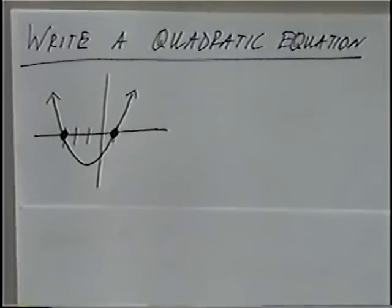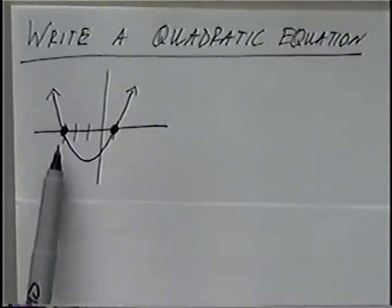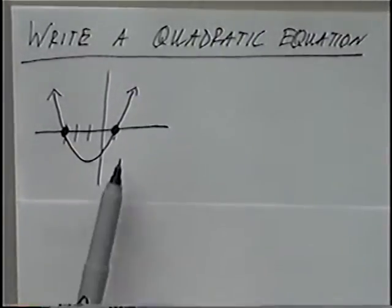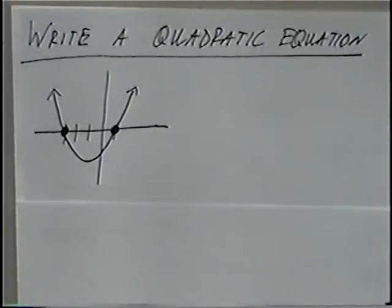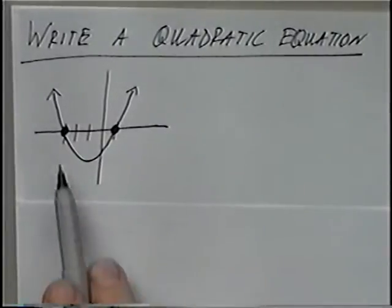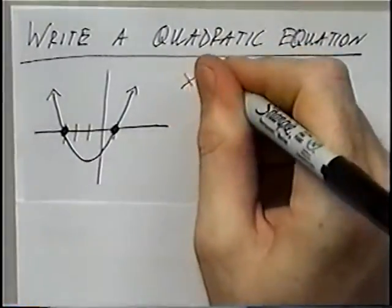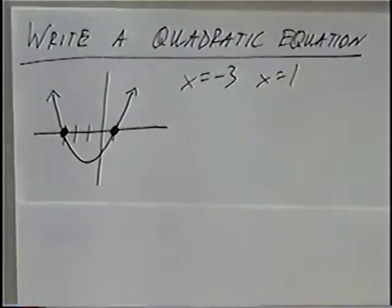The first question shows a graph of a parabola or quadratic equation. The parabola crosses the x-axis at two points: negative 3 and positive 1. These two points where the parabola crosses the x-axis are the solutions, so x equals negative 3 and x equals 1.